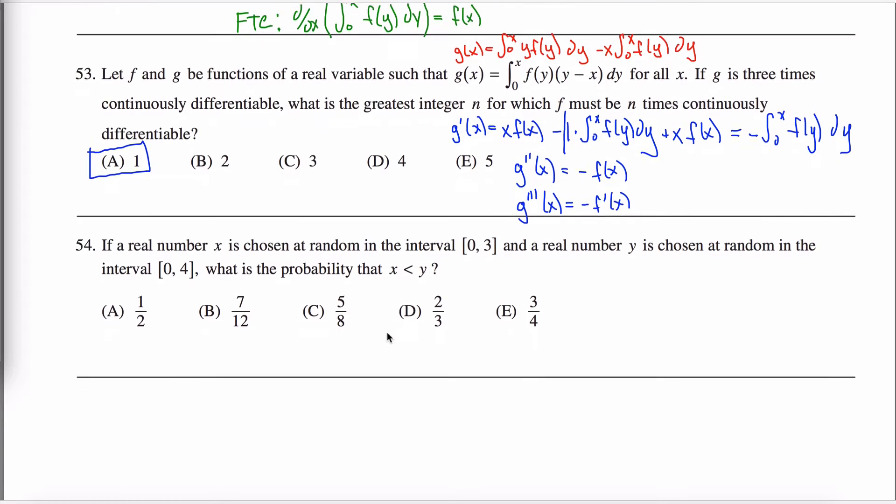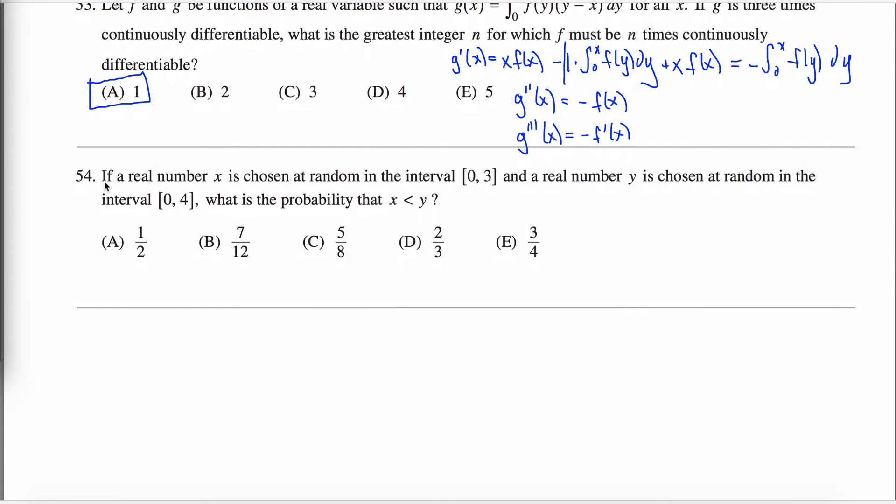All right, problem 54 of the math subject GRE practice test. What the hell is this doing? It's 54. This should have been number one, I think, or maybe four or something.